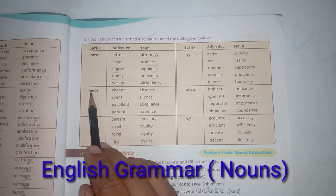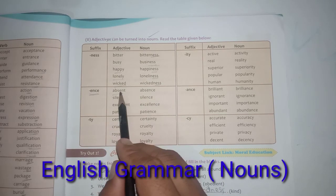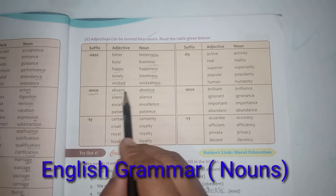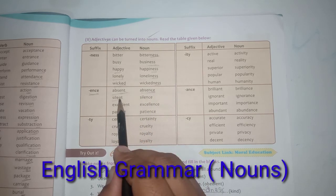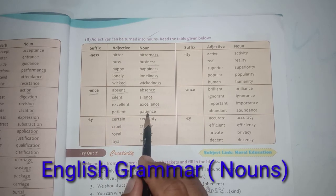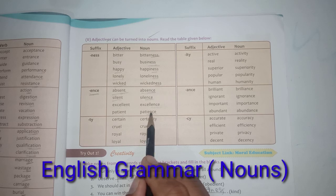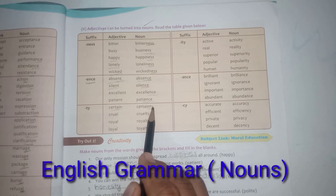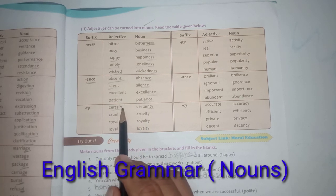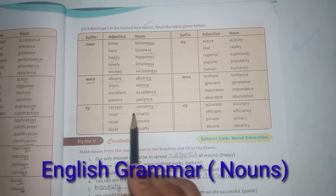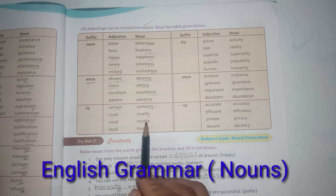Adding -ence (removing -ent): absent → absence, silent → silence, excellent → excellence, patient → patience. Adding -ty: certain → certainty, cruel → cruelty, dual → duality, royal → royalty, loyal → loyalty. These are adjectives describing characteristics of somebody.